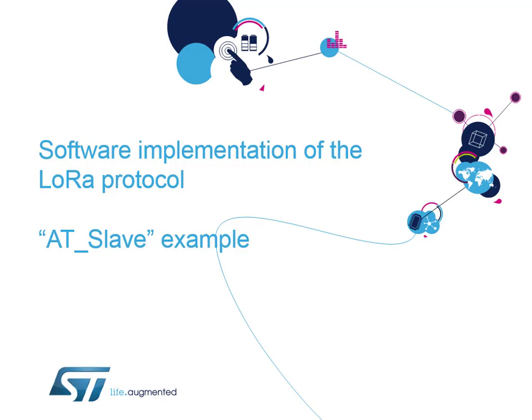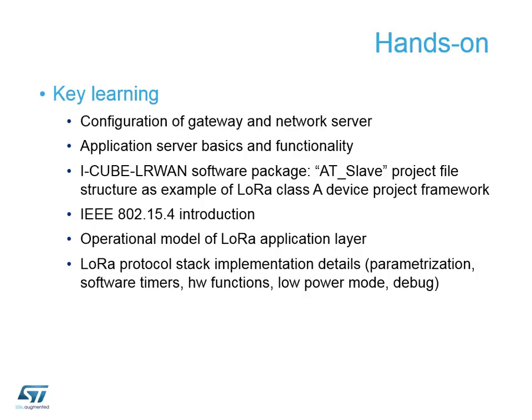Now we're going to have a look at the software stack itself. This is based on the AT slave example we did this morning, and we're going to look at how all the software works that allows us to do the LoRa protocol. In this section we'll look at the gateway we're using - our multi-tech gateway and network server application server, remembering it's a combined three-in-one box. We'll also look at the software stack downloadable from the ST.com website, specifically I-CUBE-LR1, and in particular the AT slave project file - our class A node firmware.